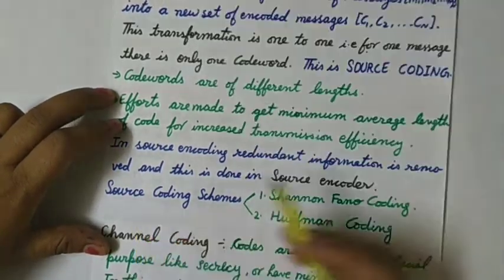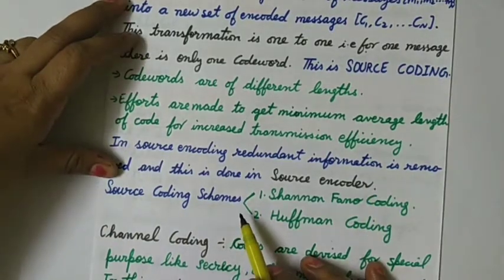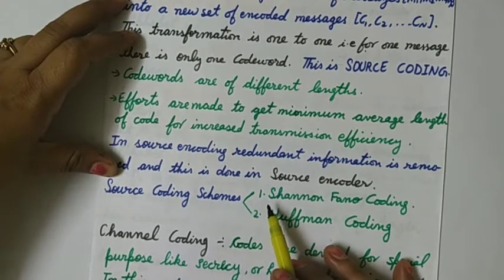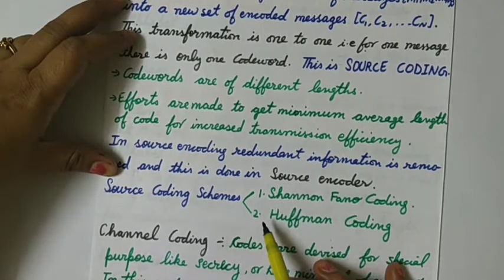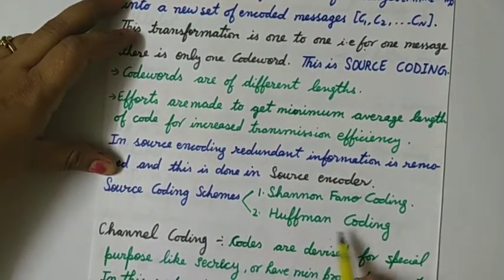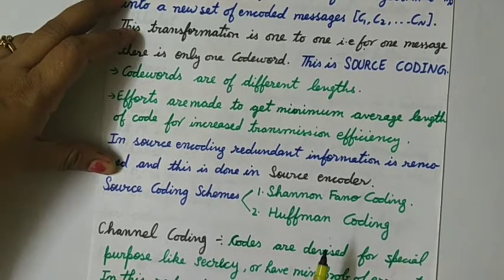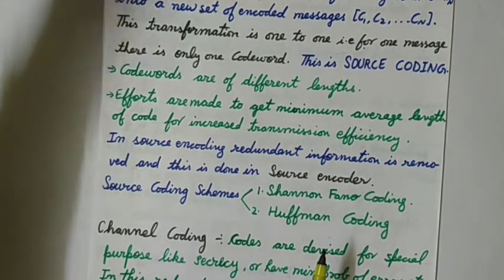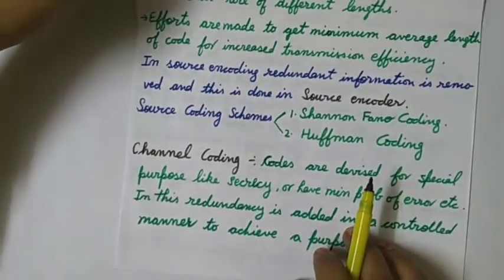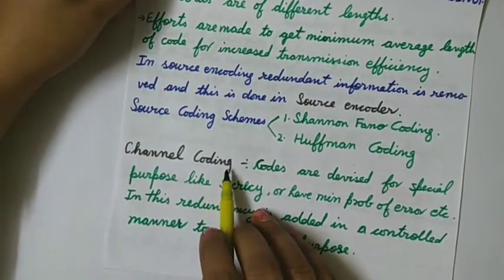Source coding schemes which we have to study in the BTEC course are of two types: Shannon-Fano coding and Huffman coding, which will be covered in other sessions.